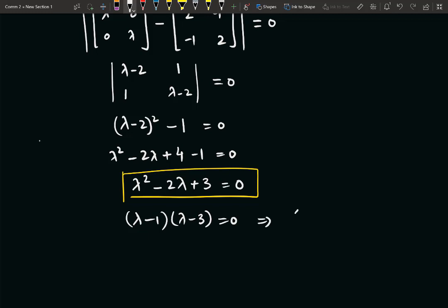So we will get λ₁ = 1 and λ₂ = 3. So these are our two eigenvalues corresponding to the given system.